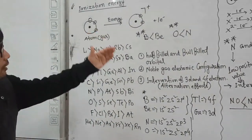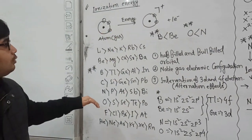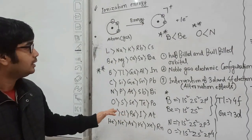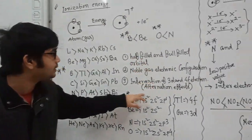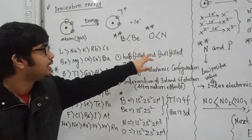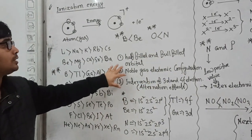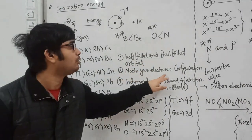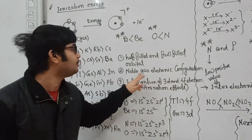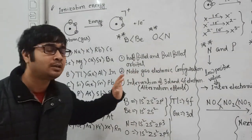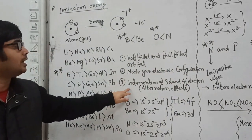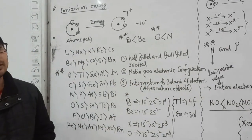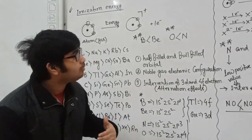So this is about ionization energy, where you need to consider a few exceptional cases. You need to consider these points whenever you encounter any exception: check for half-filled or fully-filled orbitals, noble gas electronic configuration, or any 3d or 4f electron interference.